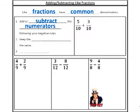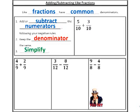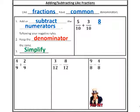Keep the denominator the same. Simplify — the last step to every fraction problem you will do for the rest of your life. Let's try the problem to the right. Five plus three gives me a numerator of eight. My denominators — a lot of people try to add them, but they stay the same. It's still ten.